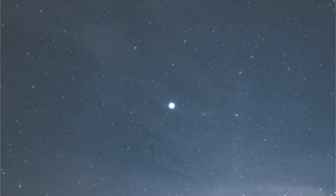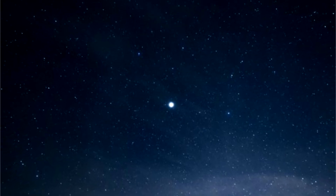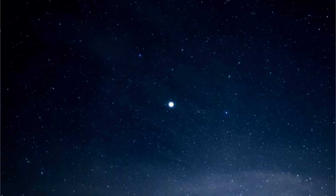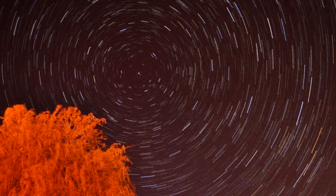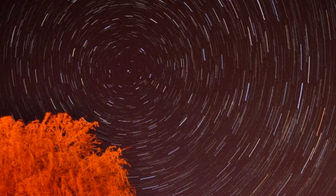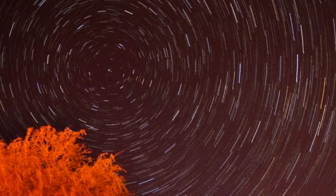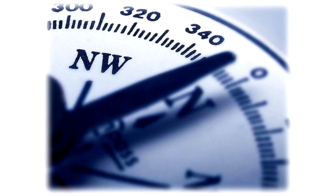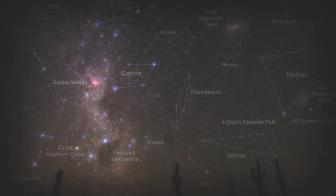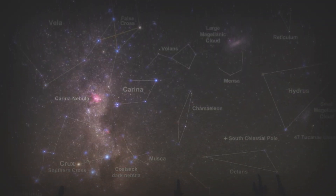The North Star sits in a position known as the northern celestial pole, which marks north and means that it looks to be pretty much static while all the other stars move around it. Because of this it is really easy to find north in the northern hemisphere, but in the south there's no star like this marking the area.